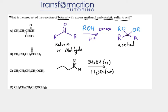First, we recognize that this reaction leads to acetal formation because we start with an aldehyde — a double bond O at the end — and we have excess alcohol (in this case methanol), plus an acid catalyst (in this case sulfuric acid). That's how we know an acetal will be forming.